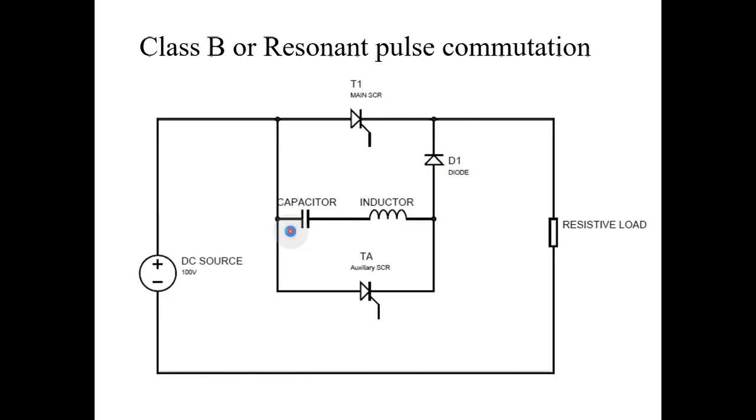At the same time, capacitor gets charged with left side plate positive and right side plate negative. Current flows from positive plate of a DC source through capacitor, through inductor, through diode D1 and back to resistive load. Like this, capacitor will get fully charged with the voltage of DC source. After fully charging of capacitor, it will get open circuited and current stops flowing.